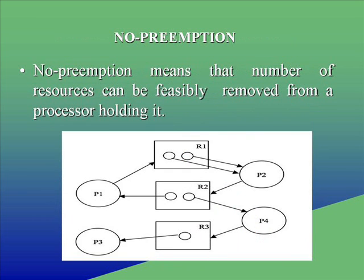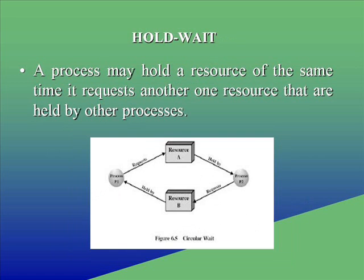No Preemption means that a resource cannot be forcibly removed from a process holding it. Hold and Wait: a process may hold a resource while at the same time it requires another resource that is held by other processes.